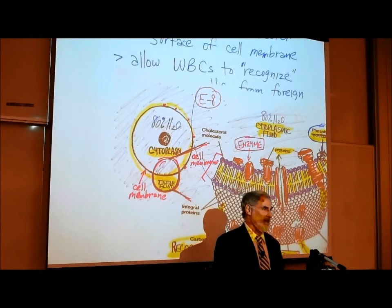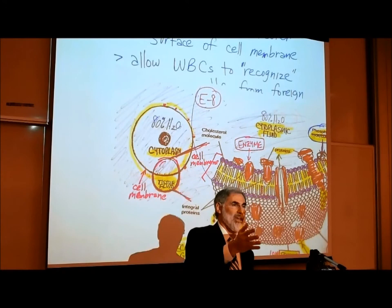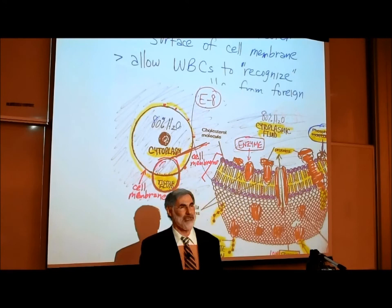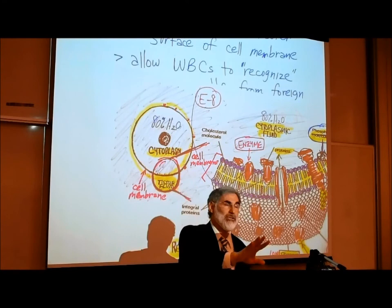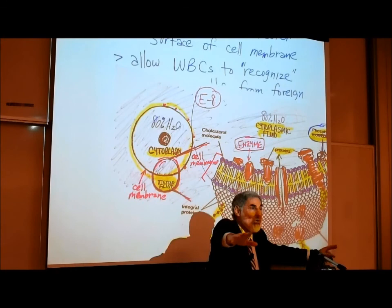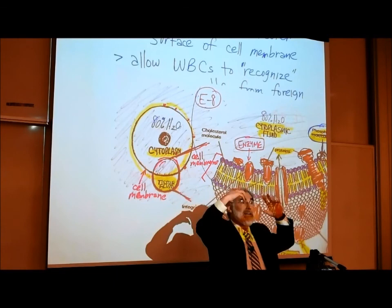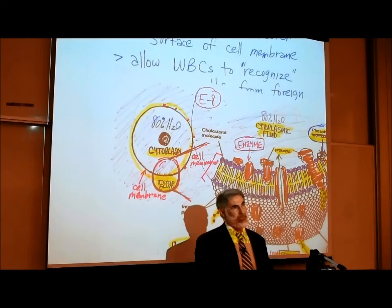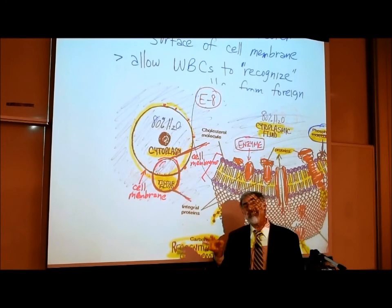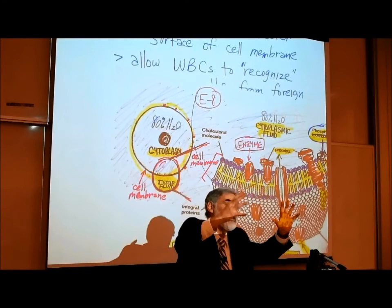Every single person has a unique set of glycoprotein recognition sites on the outer surface of every cell in their body — unless you have an identical twin. With the exception of identical twins, no other person on this planet has the same identical identity markers on the outer surface of their cells. Your white blood cells know what those recognition sites or identity markers are, and if any cell enters your body without the correct recognition sites, the white blood cell will destroy it as foreign.